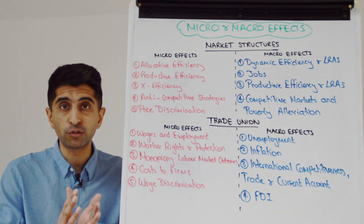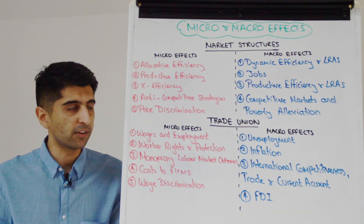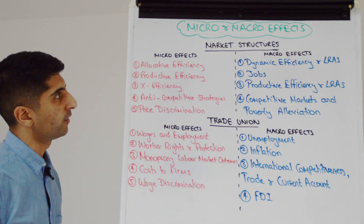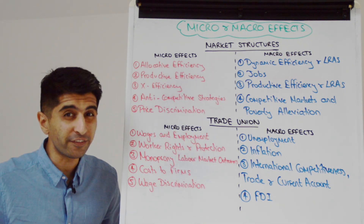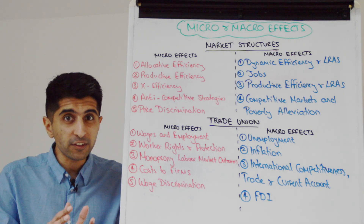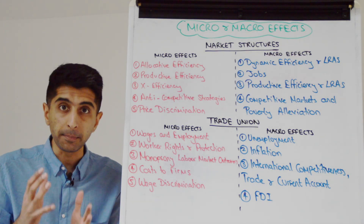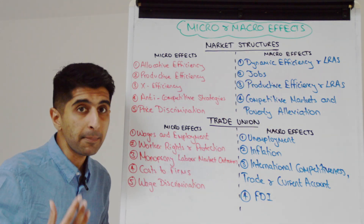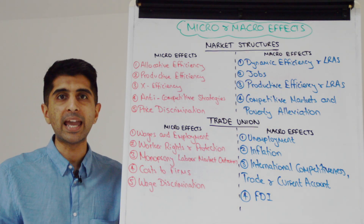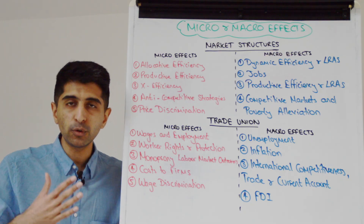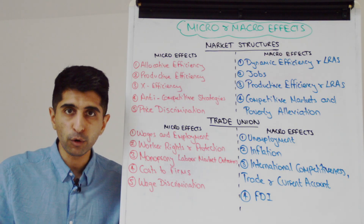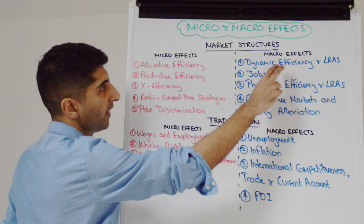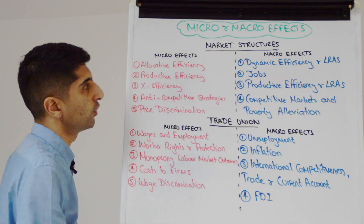We can talk about the price discriminating aspect of a monopoly as a micro effect. But what about macro effects? These don't seem as obvious, but there are some clear ones. We can talk about dynamic efficiency gains, the impact on LRAS, long-run growth, productivity — all that kind of stuff. That's very, very good.